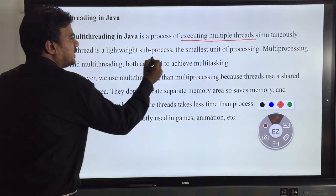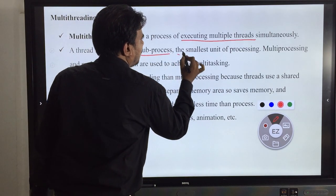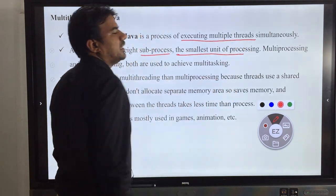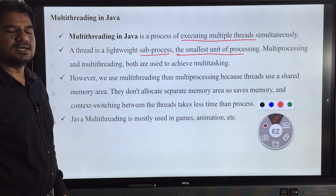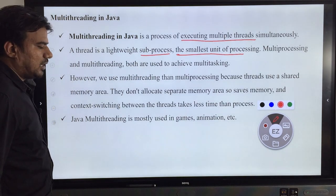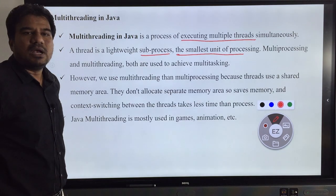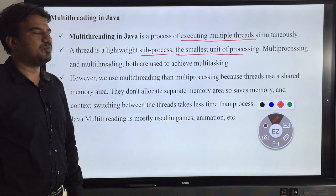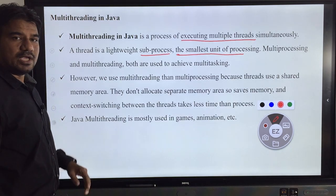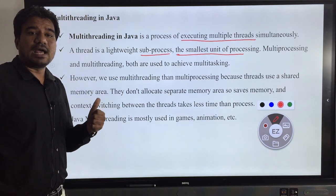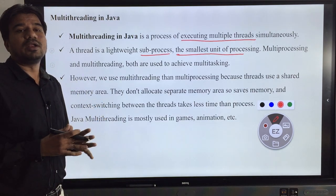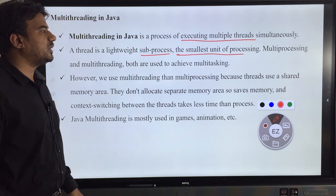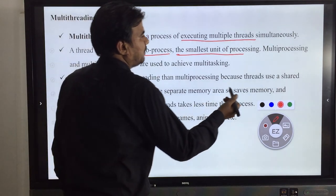How can we define a thread? A thread is a sub-process or a lightweight process — the smallest unit of work in Java, which we call a thread. If you execute multiple programs or processes, we call it multi-processing.